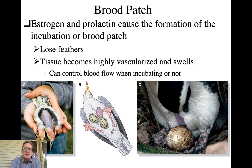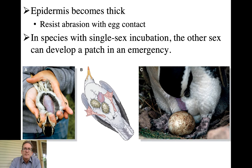In many cases the brood patch is one big solid patch, but some birds have individual little brood patches that fit individual eggs. Birds can regulate the amount of blood going to the brood patch — increasing it while incubating, but if the species takes turns incubating, the off-shift individual can reduce blood flow to those areas to reduce heat loss. The epidermis of the brood patch also becomes thicker, like a callous, to resist abrasions from continual contact with the egg.